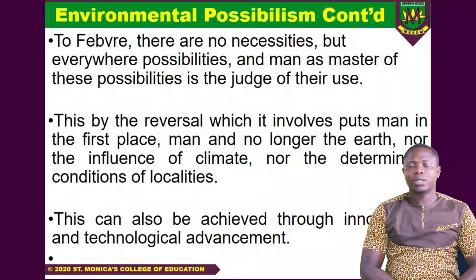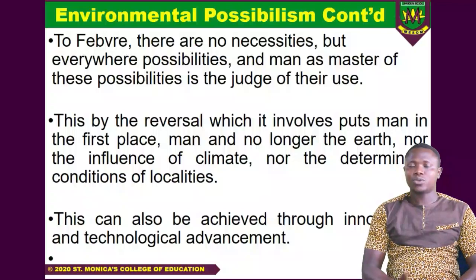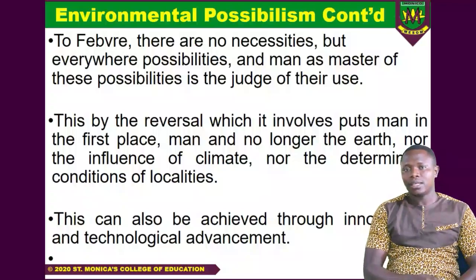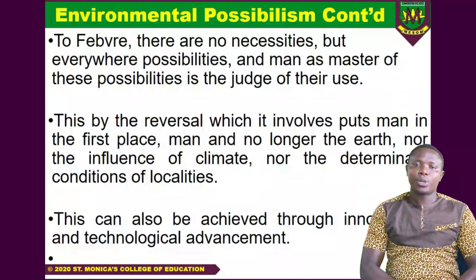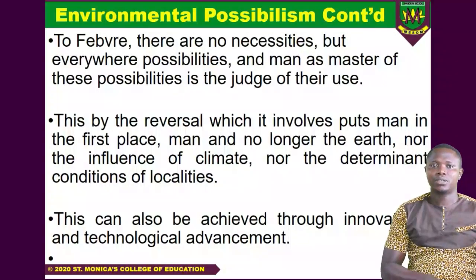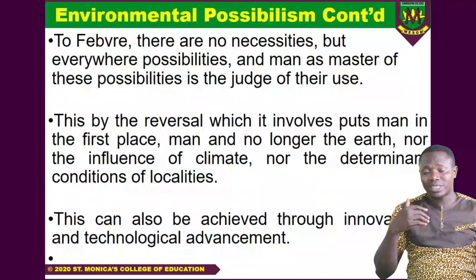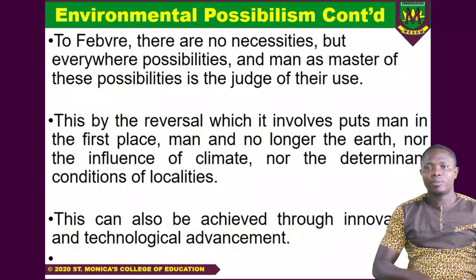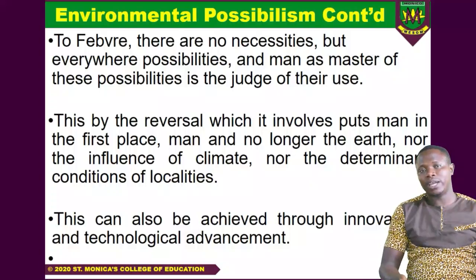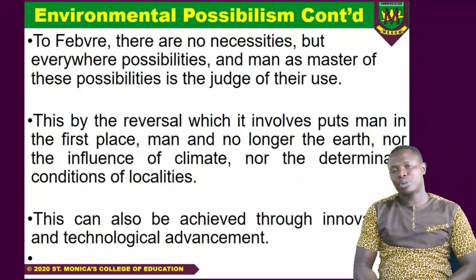To the possibilists, innovations, creativity, and technological advancement can help us to change our environment. Previously I said that now people are building in seas, people can travel under seas — that is why we have submarines traveling beneath seas. Through technology, people are traveling in the air among several others. So technology has helped man to influence the environment, instead of the environment influencing man. This is all according to the environmental possibilism proponents.